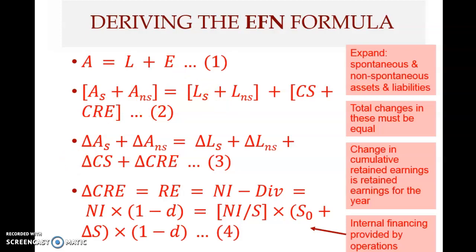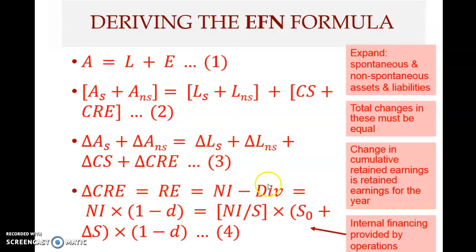In equation number four, the change in cumulative retained earnings is actually the retained earnings for the year. As we saw in the previous clip in chapter three, retained earnings equals net income minus dividends.